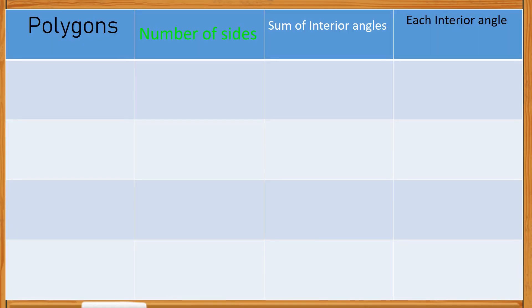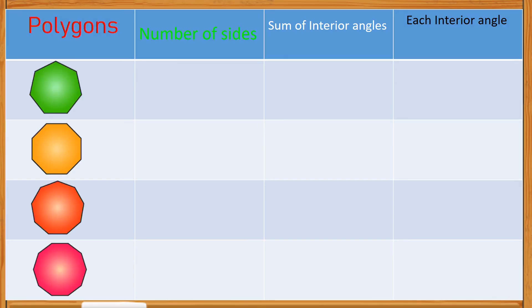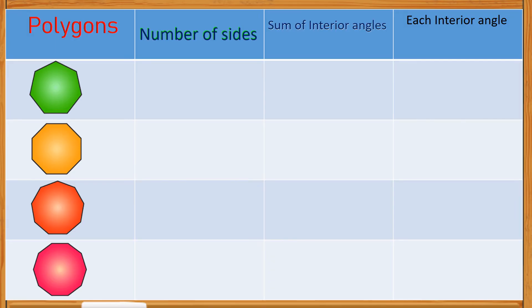Try to do these simple exercises by yourself. Study the given polygons below and complete the table with the number of sides and the sum of the interior angles, using the formula S equals N minus 2 times 180. Also identify the size of each interior angle by dividing the sum by the number of sides. You can pause this video and take as much time as you need. Once you're done, we can proceed to check your answers.